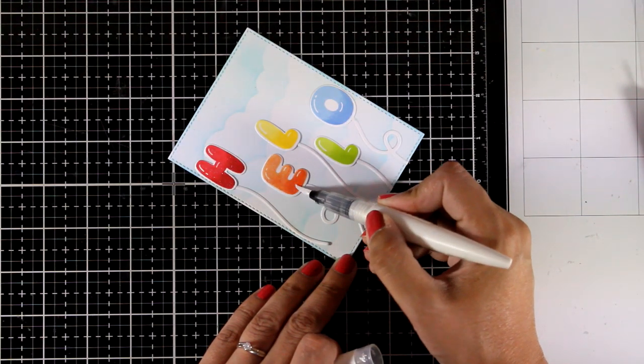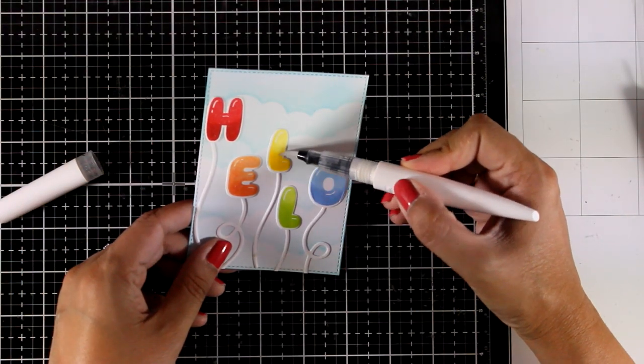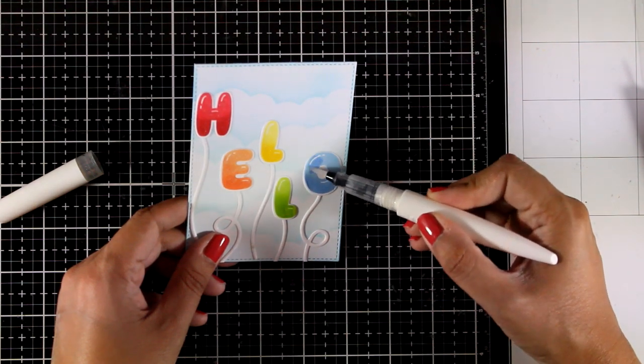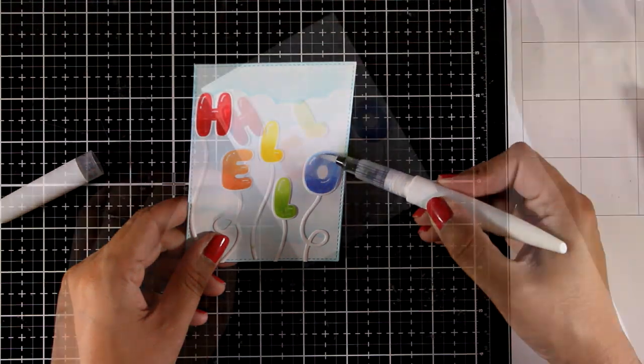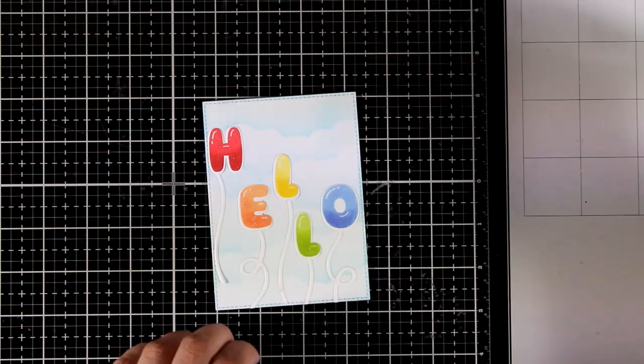Now I am using my Nuvo Shimmer pen to add some shine on the letters. Another fun thing that you can do with those balloons is to use glossy accents on top of the card, which is going to make a really fun effect. I am trying here to catch the light for you so you can see how shiny they look.